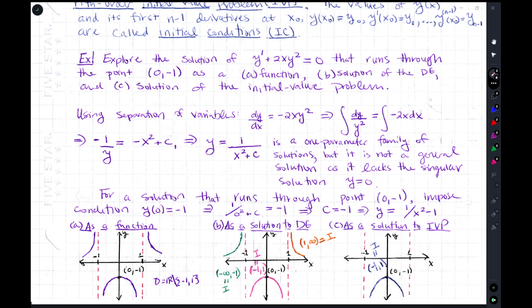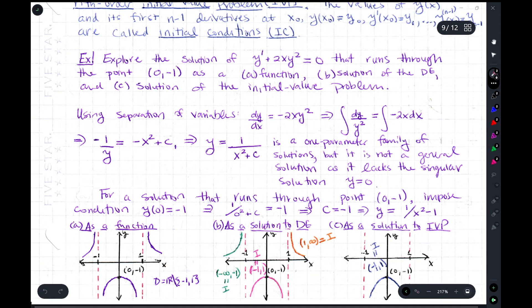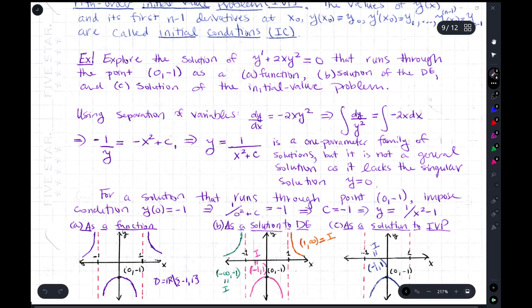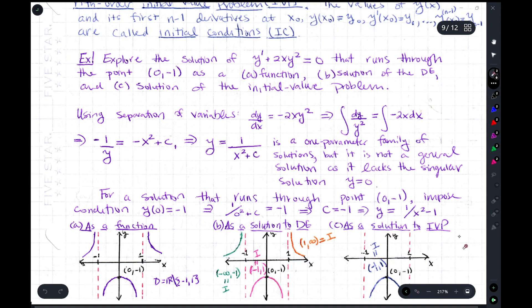This illustrates different layers of the concept. First we looked at the expression as a function. Then we looked at valid solutions to the differential equation — any branch defined on an interval with continuous derivatives works. But if we want a solution to the initial value problem where y(0) equals negative 1, only one choice remains: the middle branch, because it is the only solution curve that runs through the point (0, -1).